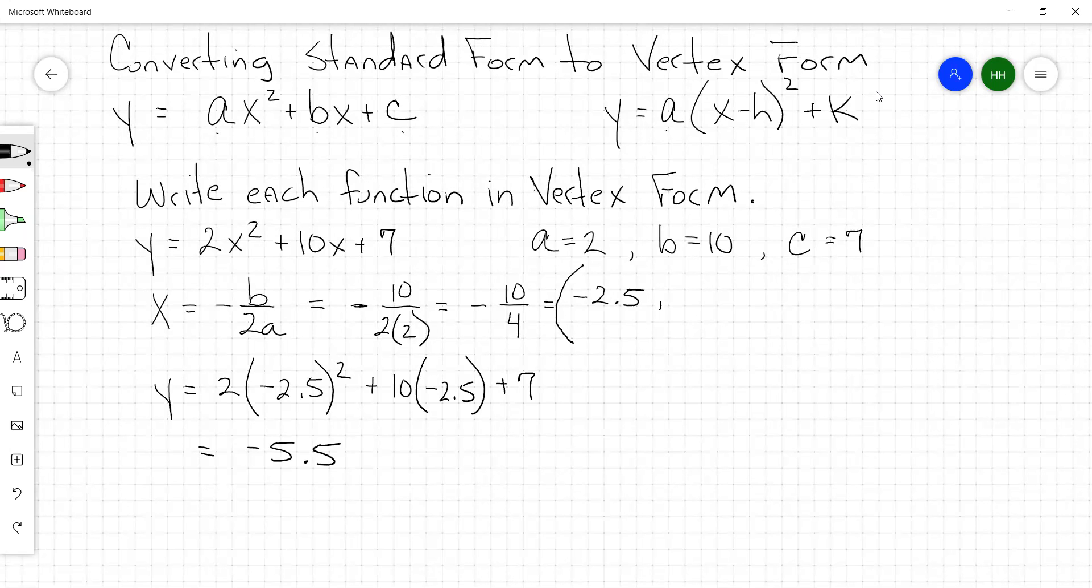Let's do this again. Do it with me. You ready? 2 times 2.5 negative x squared. Got that? You got 6.25 on your screen? Good. Plus 10 times 2.5 negative again, plus 7. You got it that time?